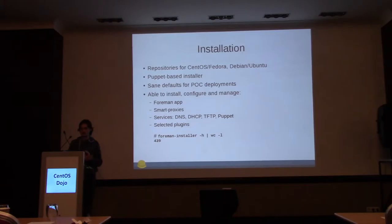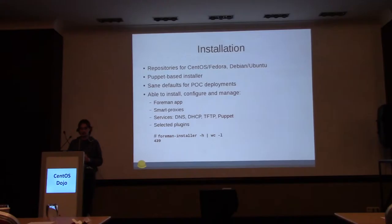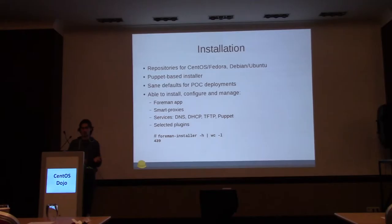We have a Foreman installer, so we run all the Puppet modules and have a small wrapper around it which exposes all the options those Puppet modules provide. The installer has many options — we try to separate normal and advanced parameters. The same defaults make it easy to get going and it will manage your application configuration. We use community modules for Apache and PostgreSQL, and for a couple of things we have our own modules — they're all on GitHub.